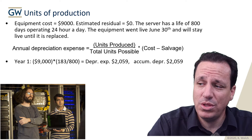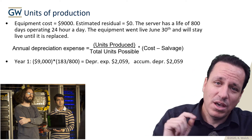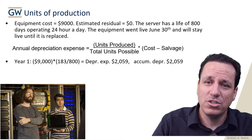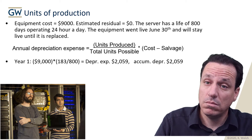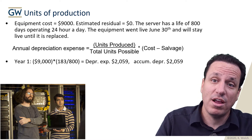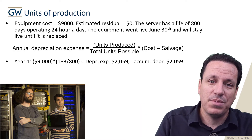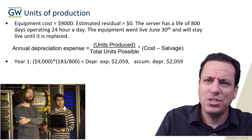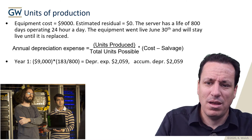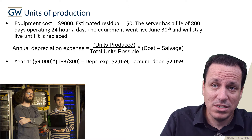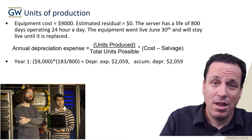Notice that because we started with this server midway through the year, the units of production depreciation is not only lower than double declining balance, but also lower than straight line. Could it have been more? Yes. If we were doing units and produced 90% of all the units this equipment could ever do, we would have depreciated 90% of the asset value in the first year. Units of production might be the fastest or the slowest way to depreciate something — it just depends on how fast you're producing.